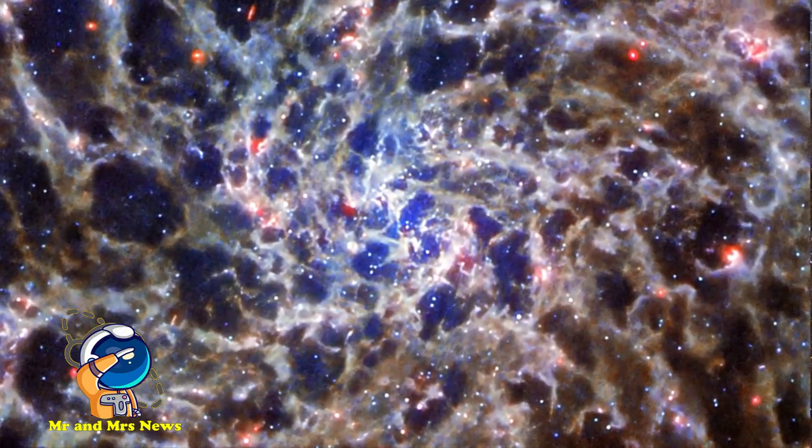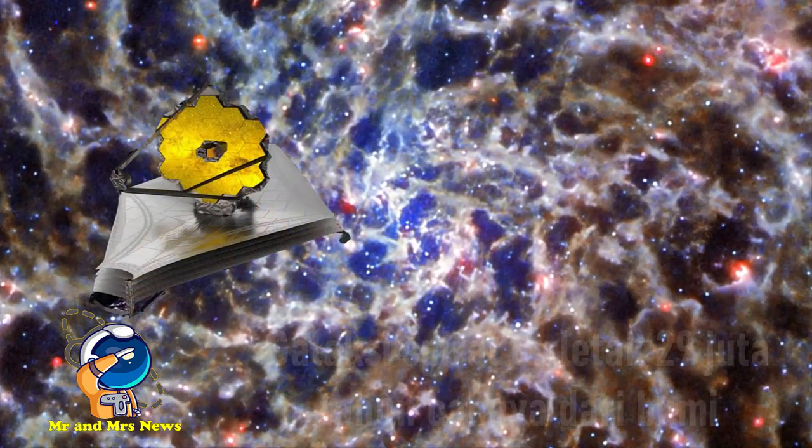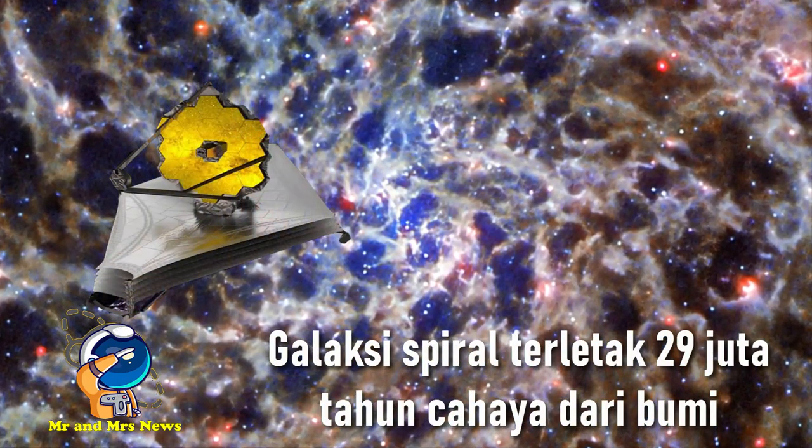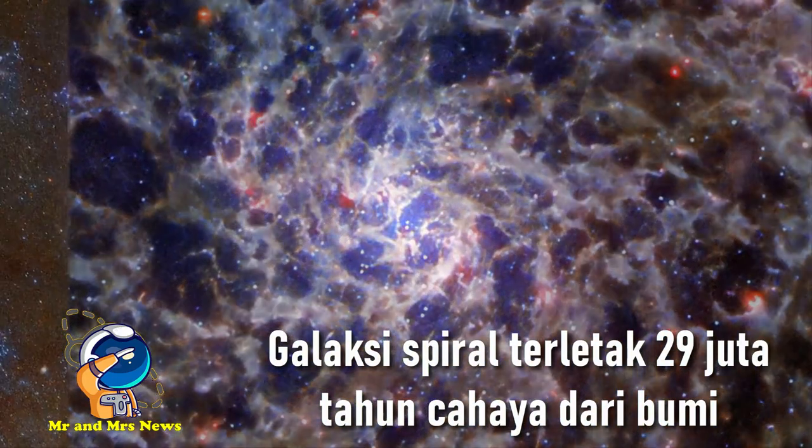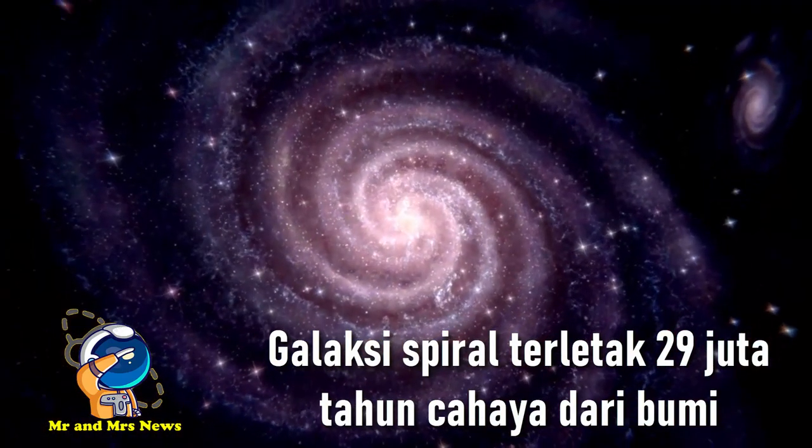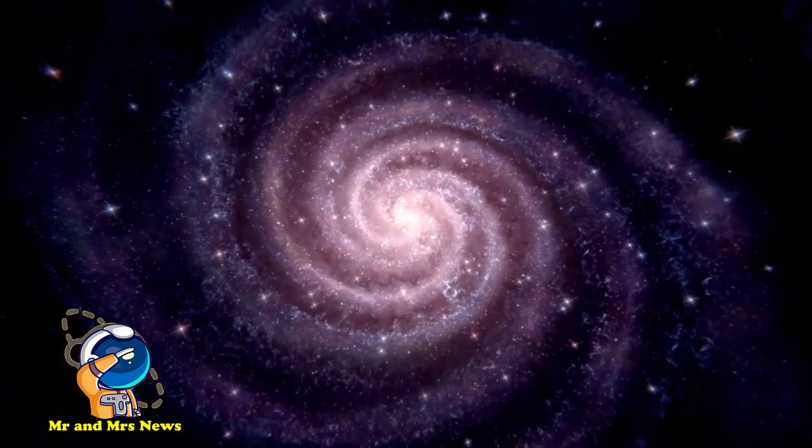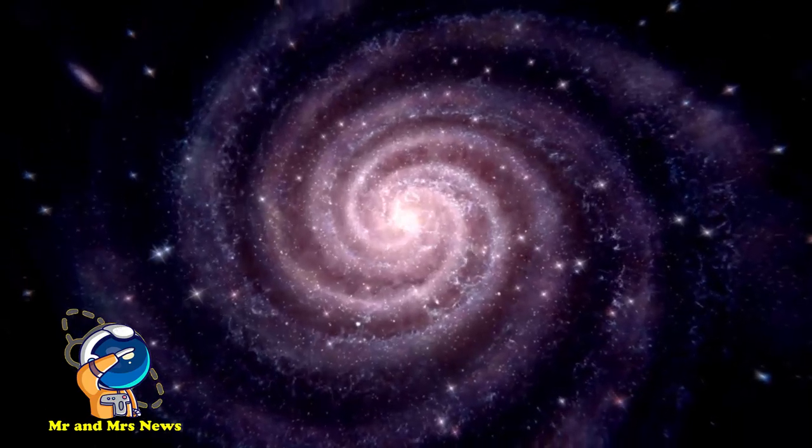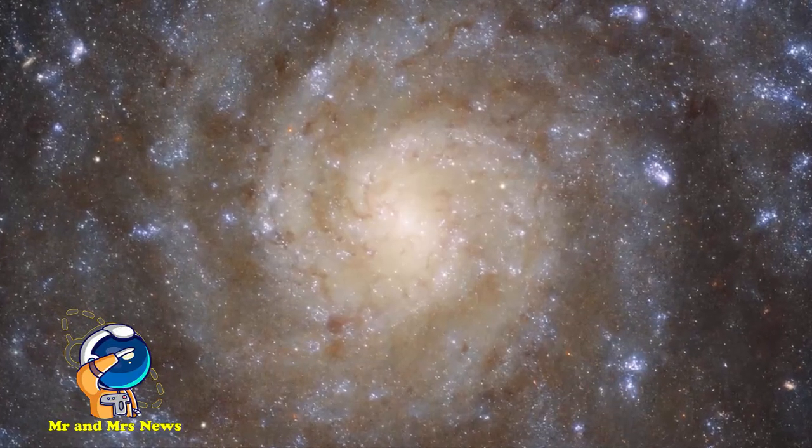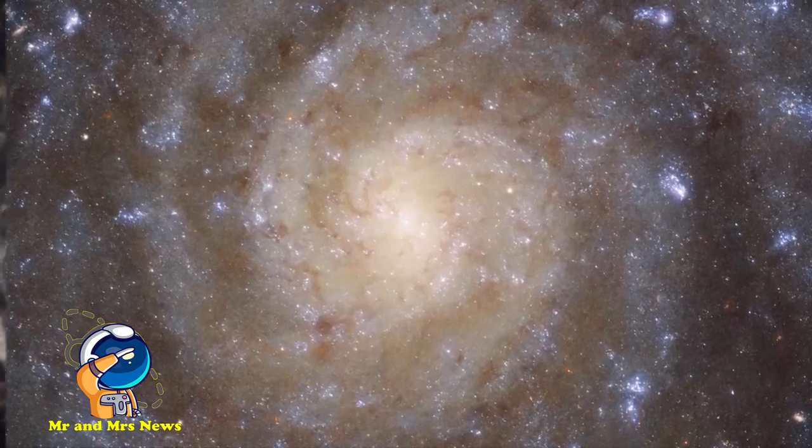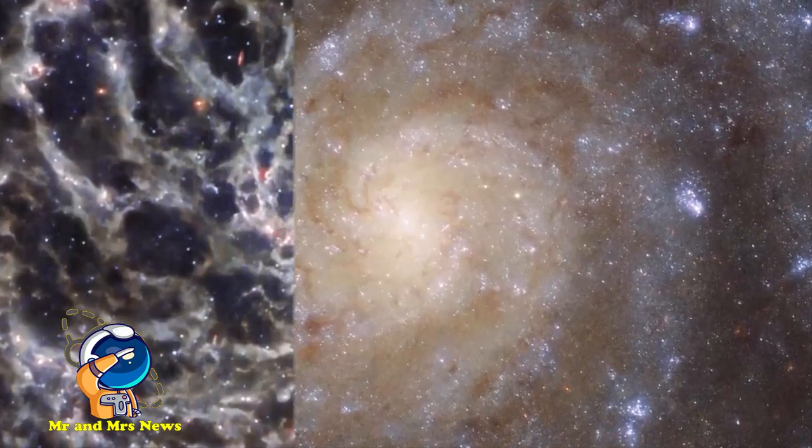Teleskop luar angkasa James Webb NASA telah menangkap pemandangan baru yang menakjubkan dari galaksi spiral yang terletak 29 juta tahun cahaya dari bumi. Gambar Teleskop James Webb menunjukkan galaksi IC5332 dalam detail yang belum pernah terjadi sebelumnya, ungkap NASA dan Badan Antariksa Eropa.